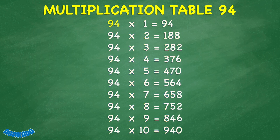94 times 1 equals 94. 94 times 2 equals 188. 94 times 3 equals 282. 94 times 4 equals 376. 94 times 5 equals 470. 94 times 6 equals 564. 94 times 7 equals 658. 94 times 8 equals 752.